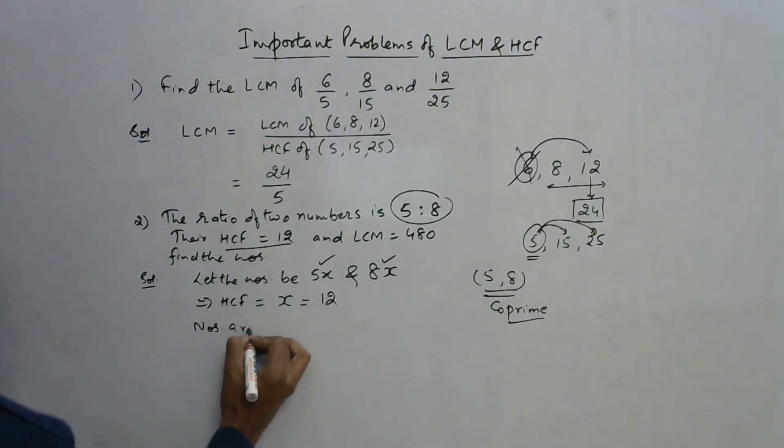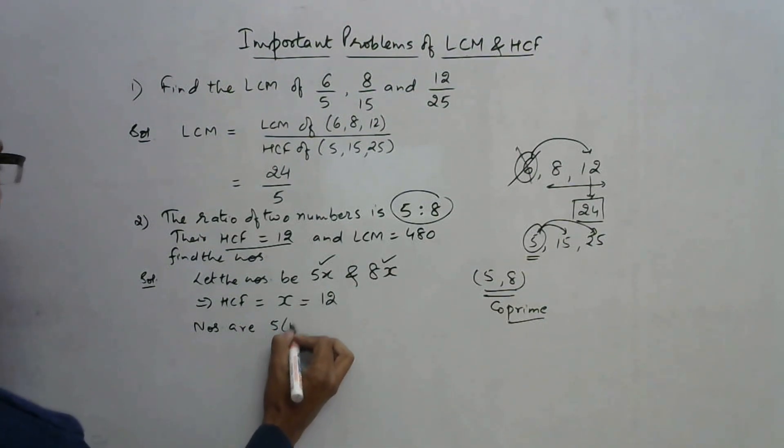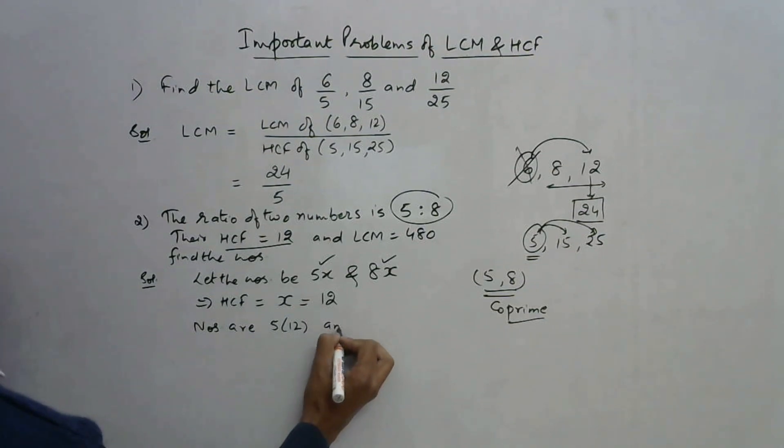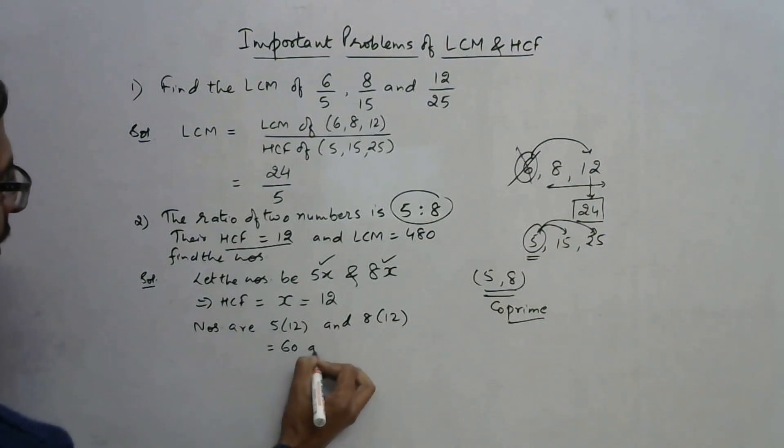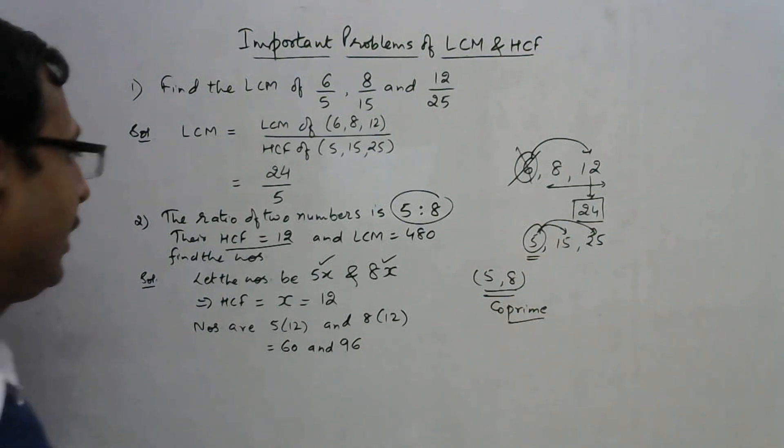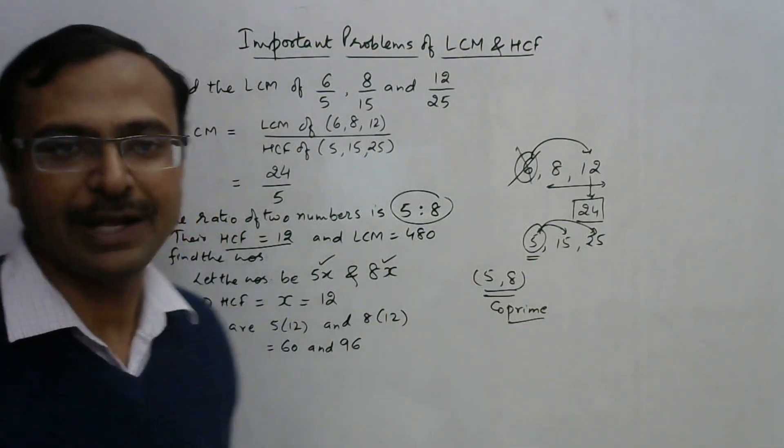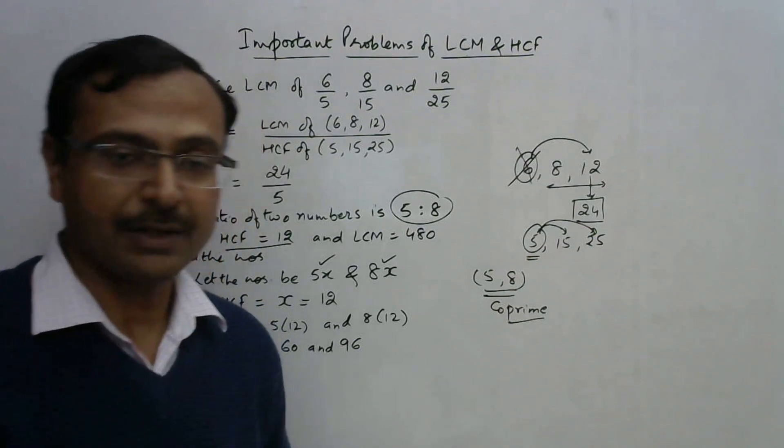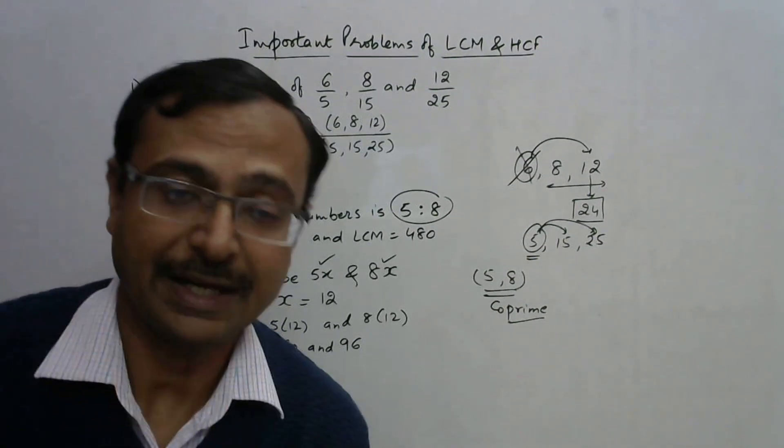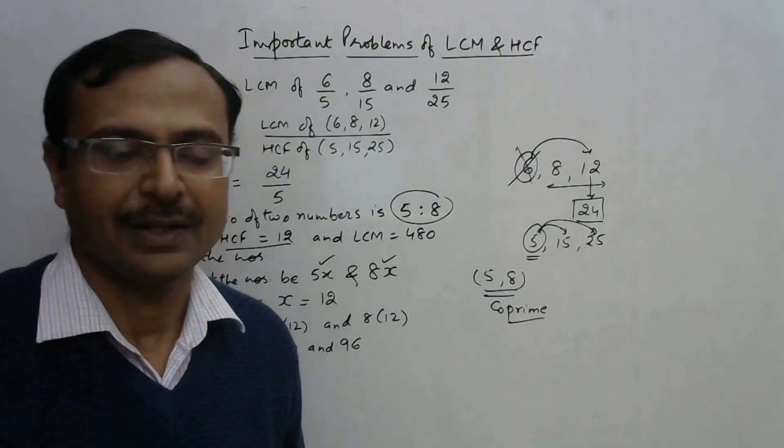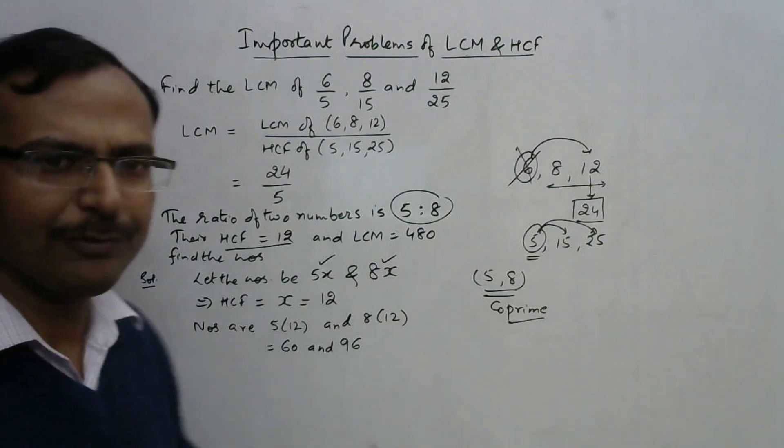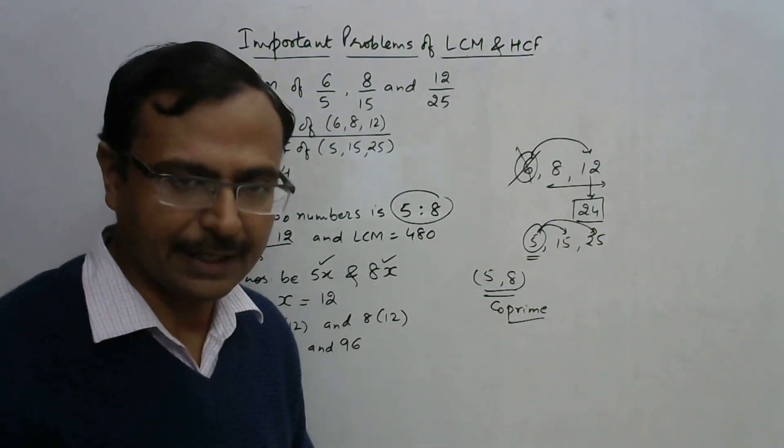Just multiply the HCF by the two terms of the ratio to get the answer. The numbers are 5 into 12 and 8 into 12, which is 60 and 96. Very easy again, but basic understanding will help you solve this question quite easily without spending a lot of time in exams.